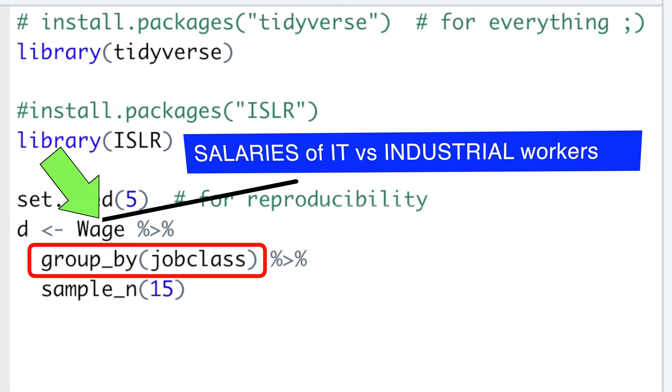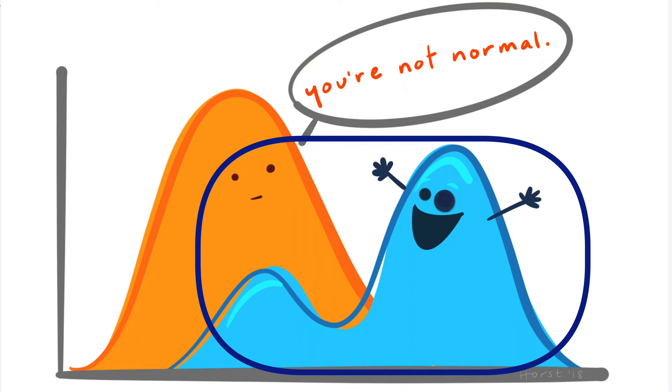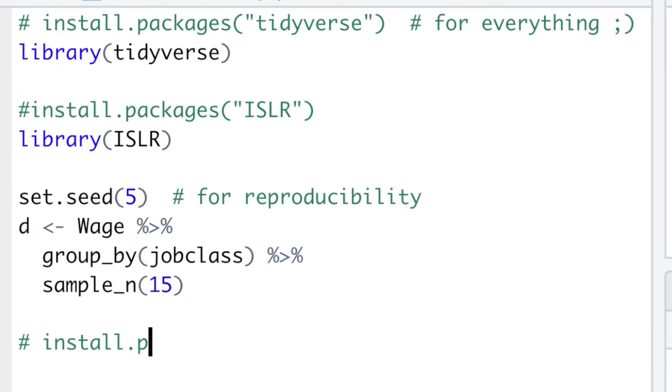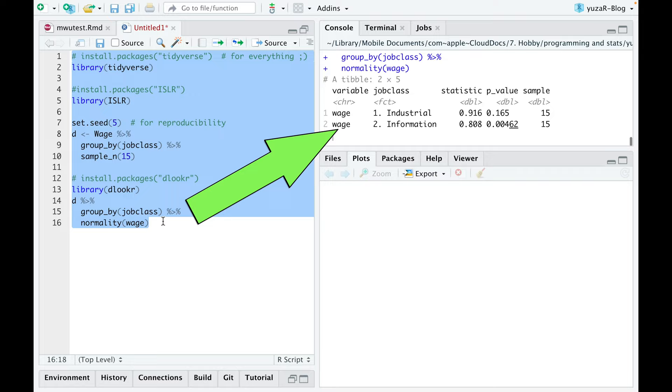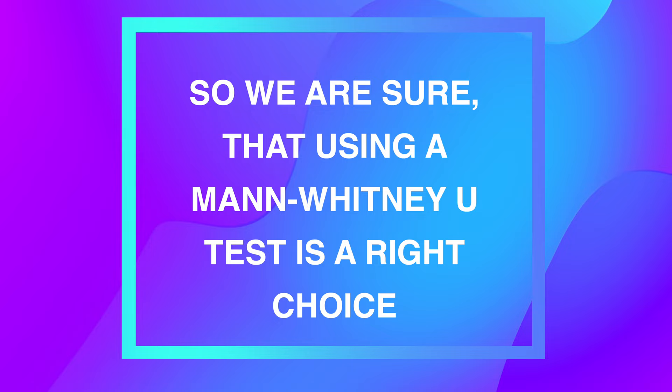But before using a non-parametric Mann-Whitney U-Test, we have to make sure that our data is really not normally distributed. Because using Mann-Whitney U-Test for normally distributed data out of laziness to check for normality might produce a completely wrong result. For that, we'll use the normality function from the Luca package, which conducts Shapiro-Wilk normality tests with every group. Low p-value in one of the groups is enough to conclude that our data is not normally distributed, so we are sure that using Mann-Whitney U-Test is the right choice.